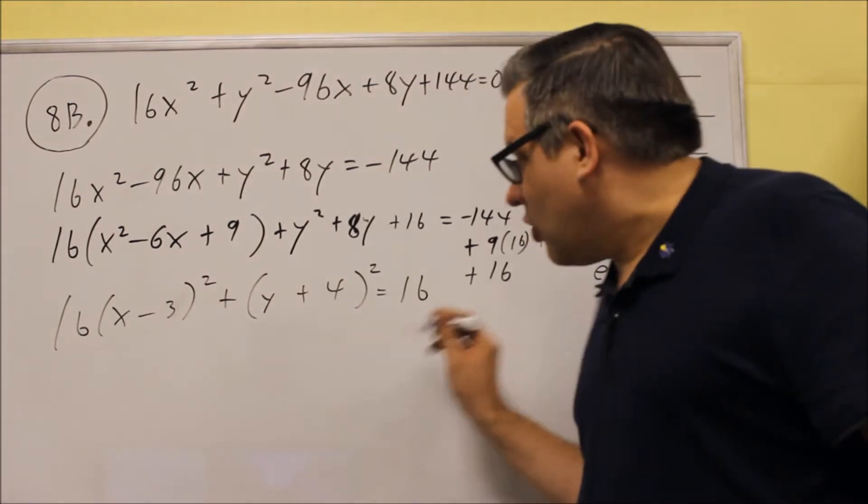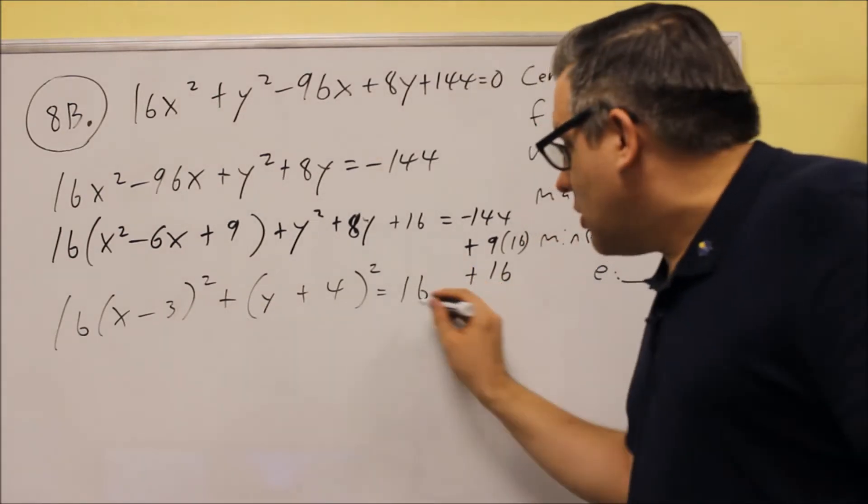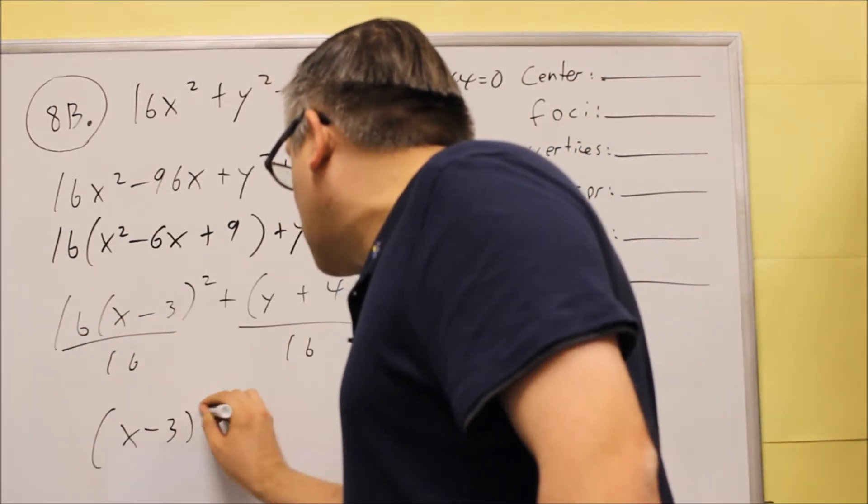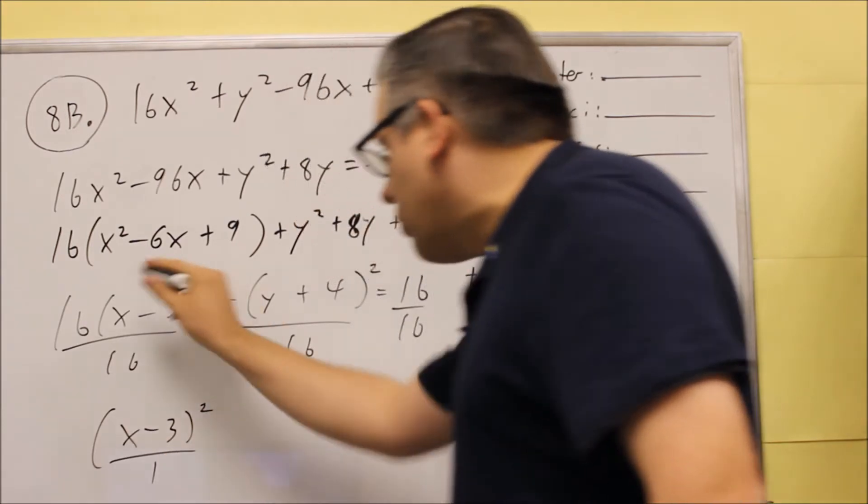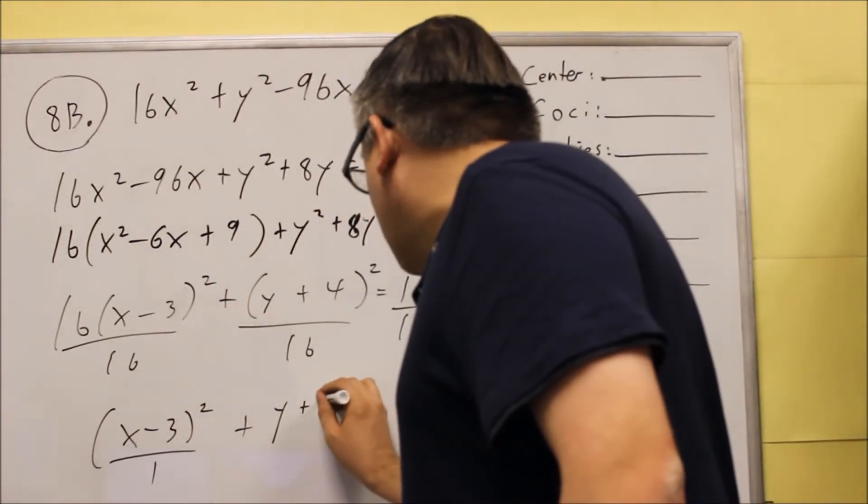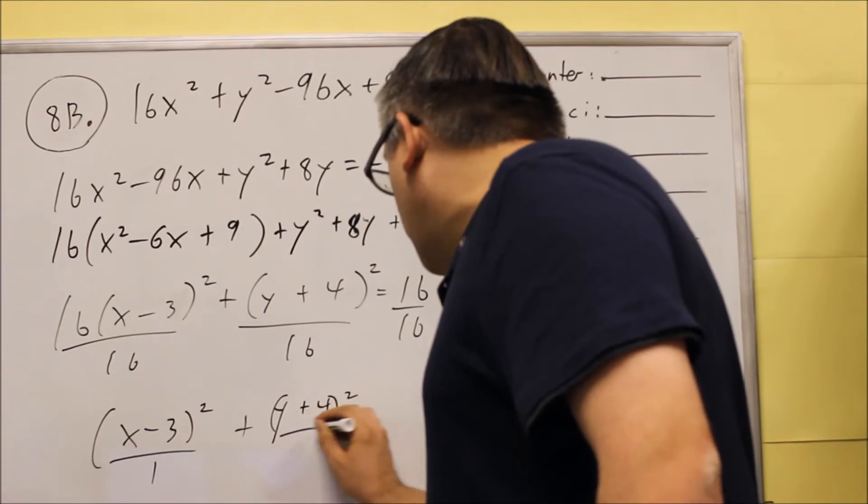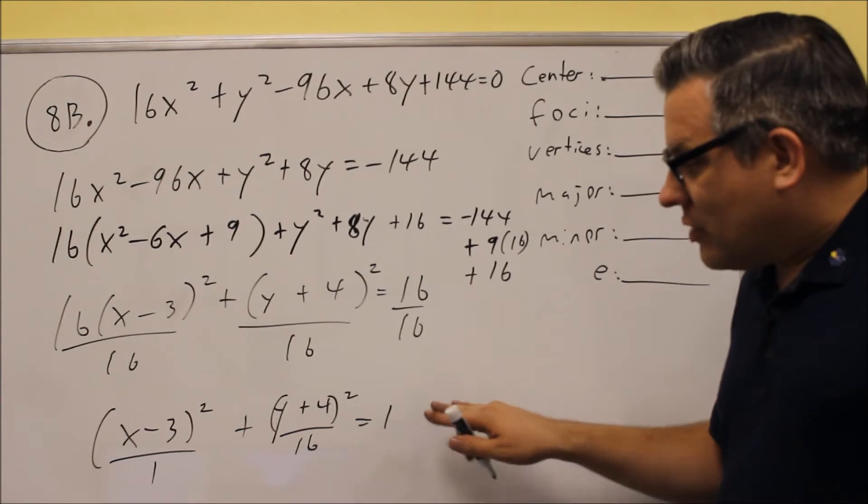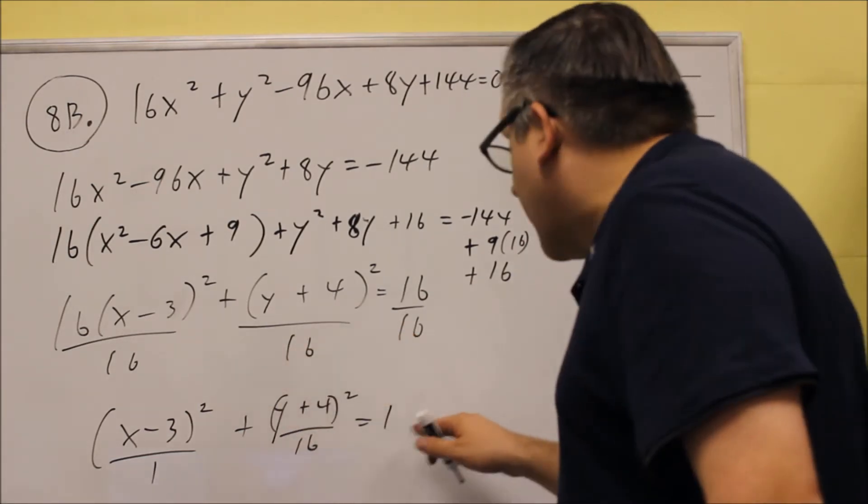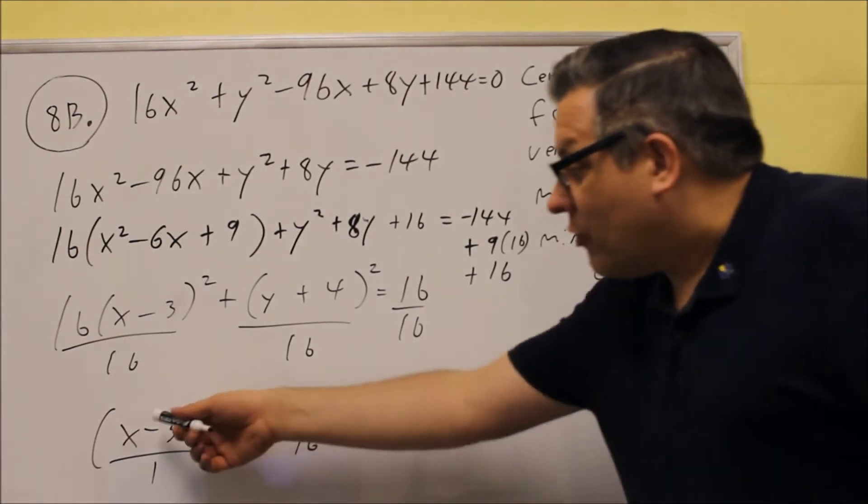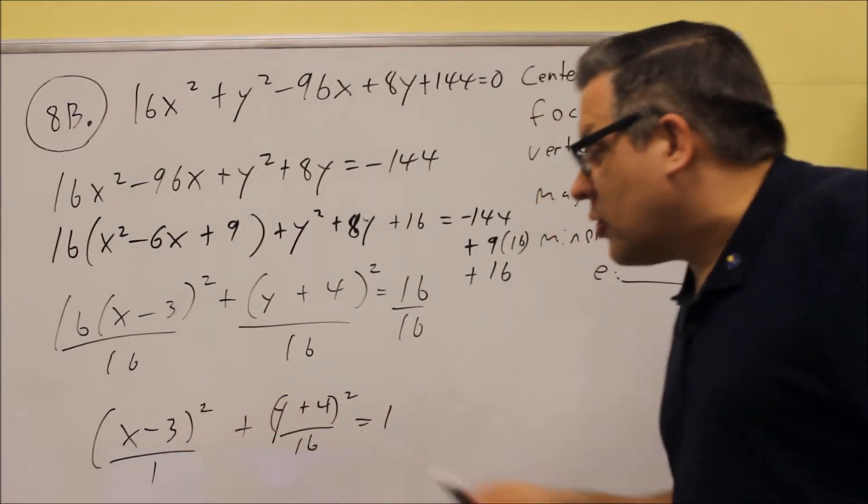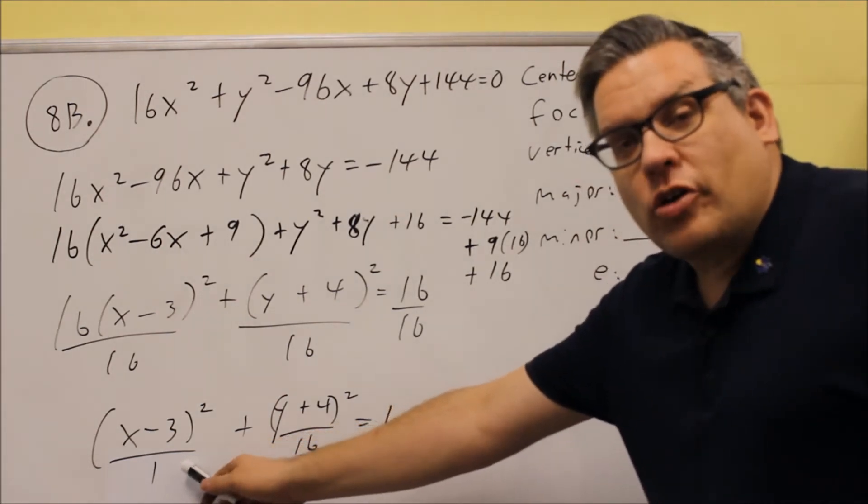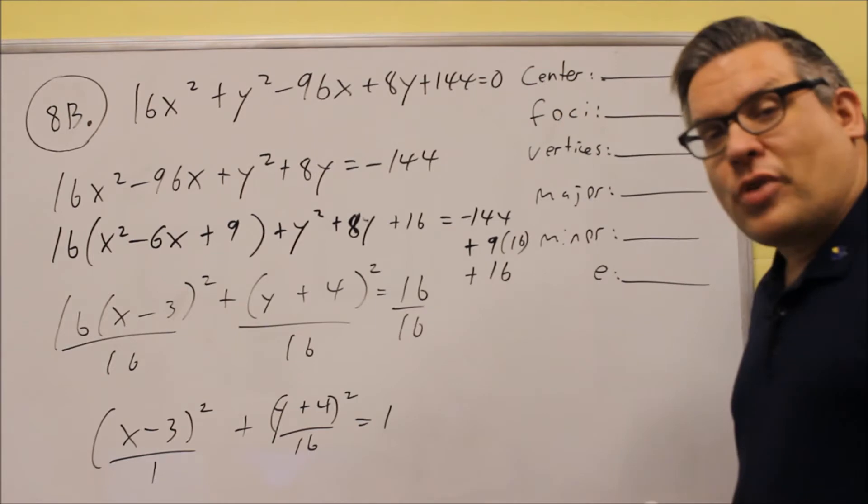We're almost there. We have to get a 1 after the equal sign. So we're going to divide everything by 16, and we get X minus 3 squared over 1, we're going to reduce that, plus Y plus 4 squared over 16 equals 1. So this that we have is what we want to get to. We want to bring it all down to this type of format where you have something quantity squared with some numbers underneath. So even though 16 and 16 goes away, I wanted to actually put a 1 underneath here so we actually have a placeholder there.